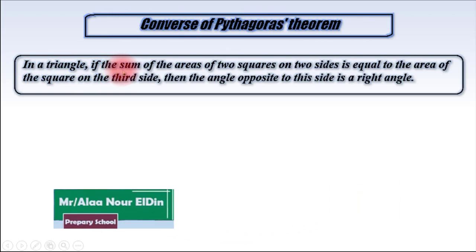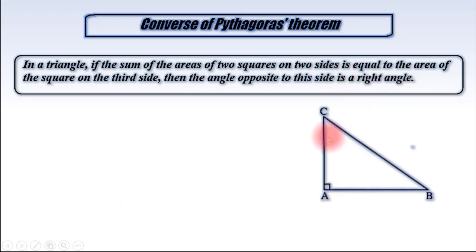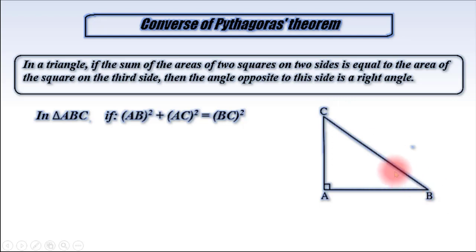In a triangle, if the sum of the area of two squares on two sides is equal to the area of the square on the third side, then the angle opposite to this side is a right angle. In triangle ABC, AB power 2, which is the area of the square drawn on AB, plus AC power 2 equals BC power 2. Therefore, this triangle is a right angle triangle at A.